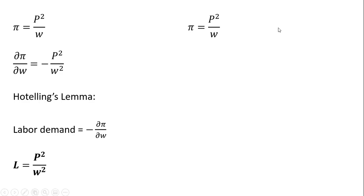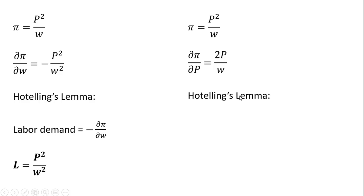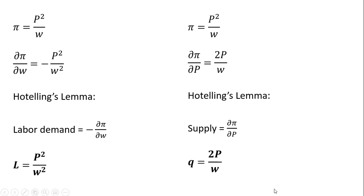Another application: let's take the partial derivative of the indirect profit function with respect to price. Hotelling's Lemma tells us that this partial derivative of the indirect profit function with respect to price gives us the firm's supply equation. So the firm supply equation is Q = 2P / W.